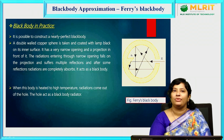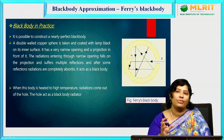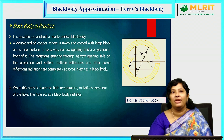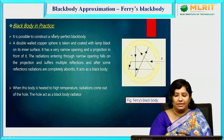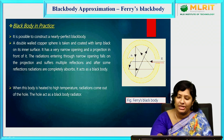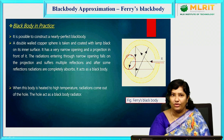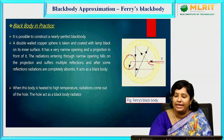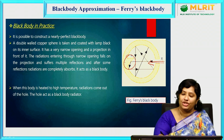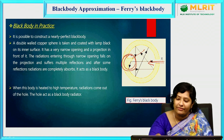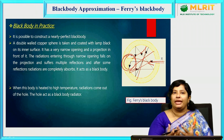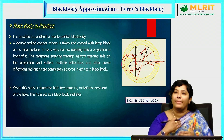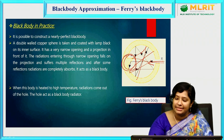It is possible to construct a nearly perfect blackbody, since no perfect blackbody exists in reality. We consider a double-walled copper sphere coated with lamp black on the inner part, having a very narrow opening with a projection in front of it. Radiation entering through the narrow opening falls on the projection and undergoes multiple reflections, after which the radiation is completely absorbed, so that it acts as a blackbody.